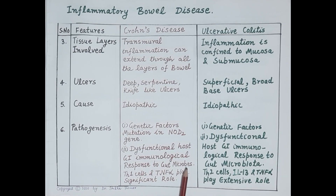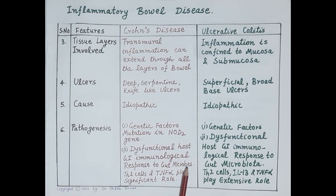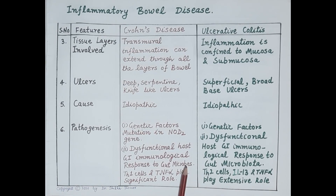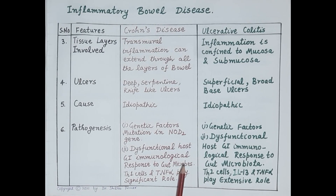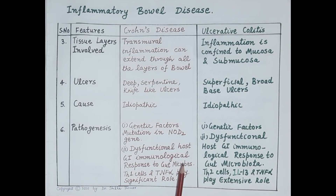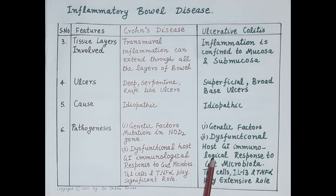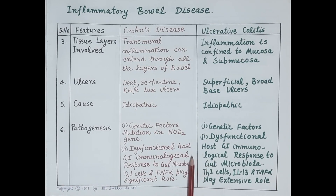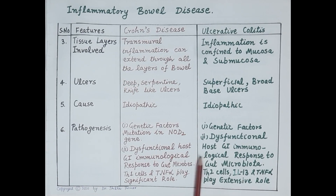In both Crohn's disease and ulcerative colitis, there is a dysfunctional host immune response to gut microbes — an abnormal interaction between gut microflora and the immune system. This abnormal response causes excessive generation of pro-inflammatory cytokines, which cause inflammation that perpetuates indefinitely, resulting in chronic inflammation of the gut wall and ultimately ulceration. This mechanism plays a very important role in the pathogenesis of both diseases.